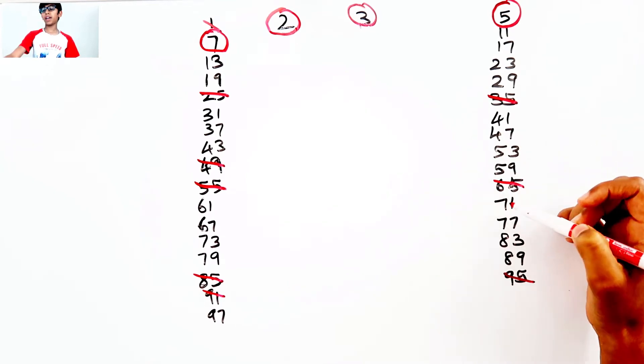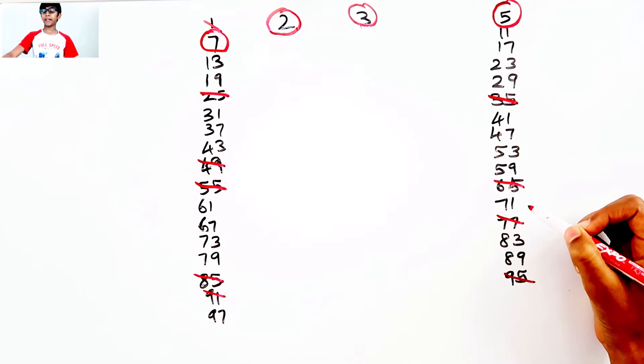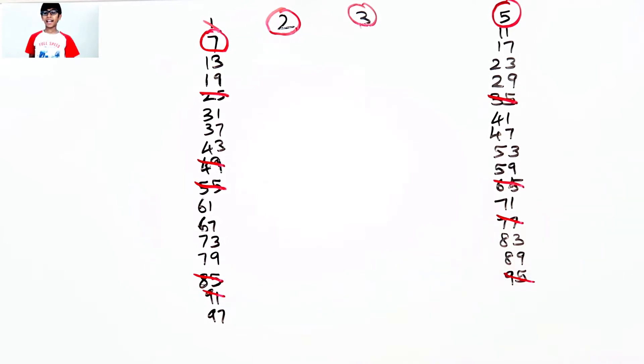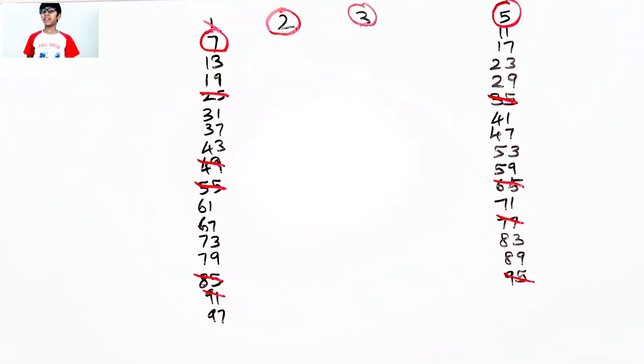1, 2, 3, 4, 5, 6, 7. 77 can be divided by 7. And that's it. All of the remaining numbers that haven't been crossed out are the prime numbers.